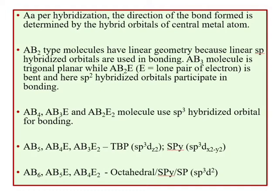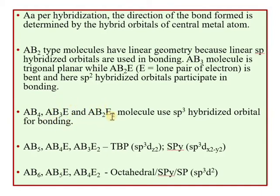For tetrahedral geometry — AB4, AB3E, and AB2E2 molecules — for example CH4, NH3, and H2O, and also SnCl2 as an example of AB2E — in all these cases the central atom has sp3 hybridized orbitals, but the shape is different: AB4 is tetrahedral, AB3E is pyramidal, and AB2E2 is bent or V-shape.